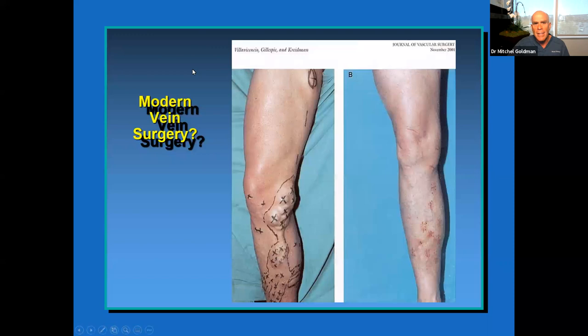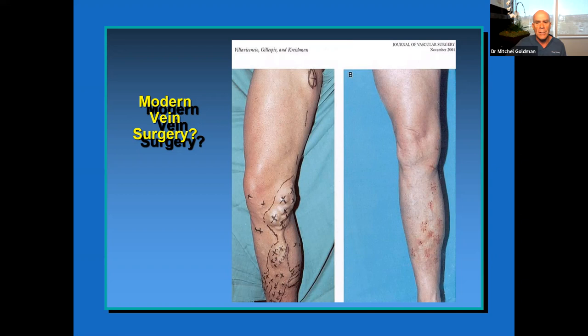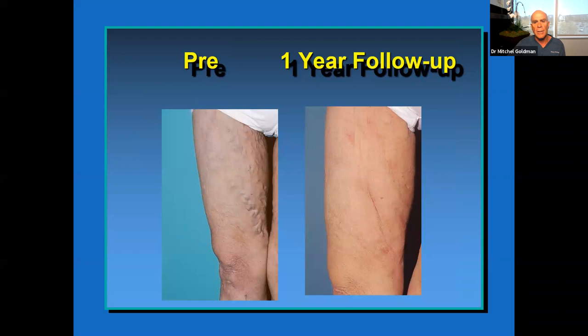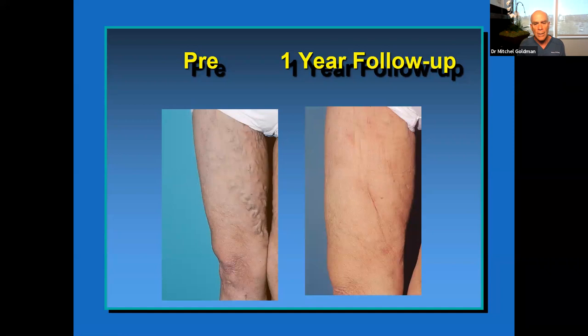A 2001 article on modern vein surgery showed how vascular surgeons would treat patients — a lot of cutting with poor cosmetic results. A better approach is a procedure called phlebectomy. One of my patients had really prominent varicose veins, and after treatment you can't even tell where the veins were or where the surgery was performed. We do this procedure with fully awake patients under local anesthesia, using tiny hooks — it's called ambulatory phlebectomy.